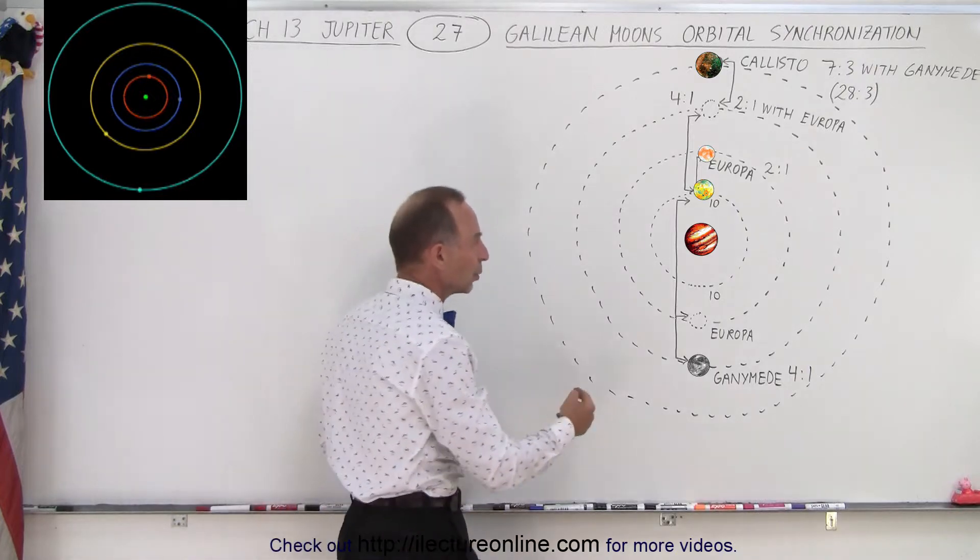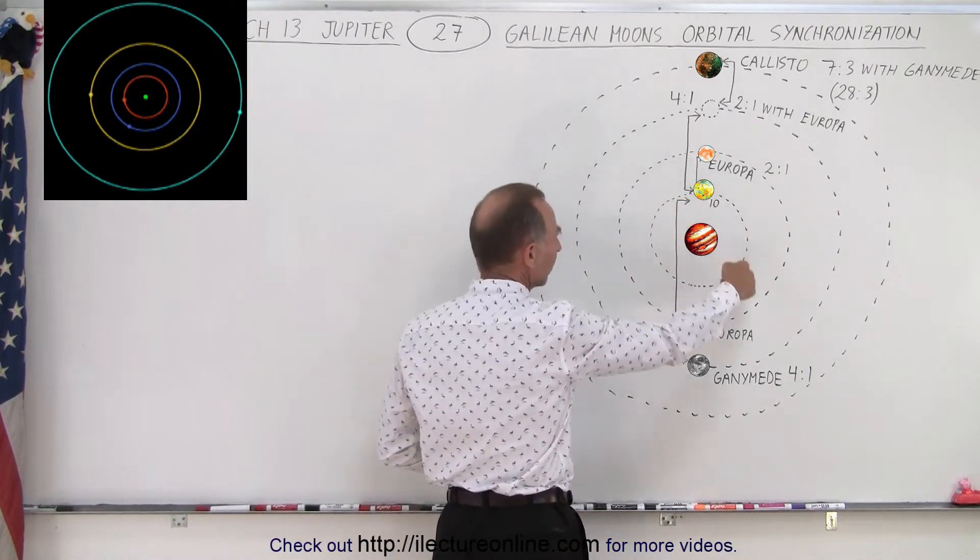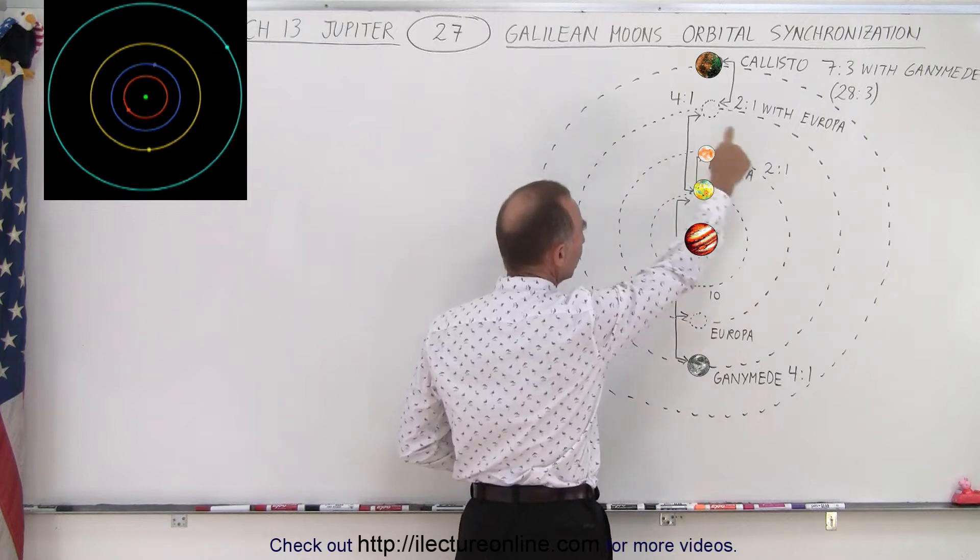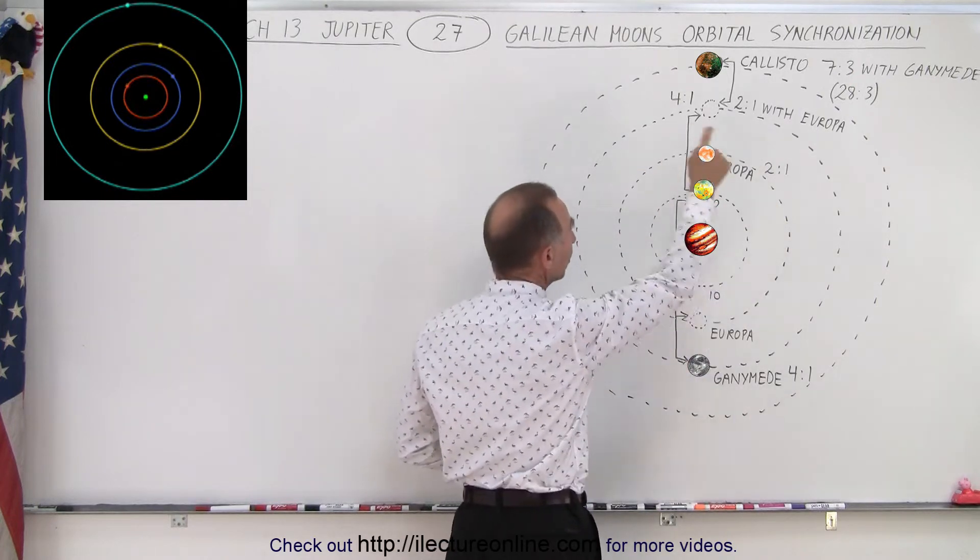So we have the four Galilean moons. The inner moon is Io, the second moon is Europa, the third moon is Ganymede, and the fourth moon is Callisto.